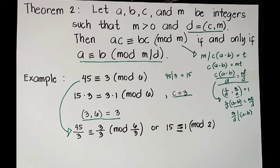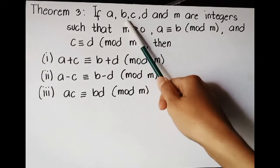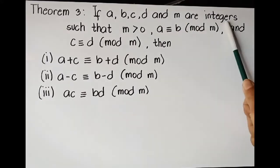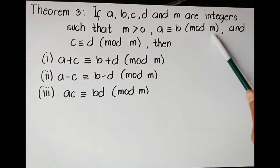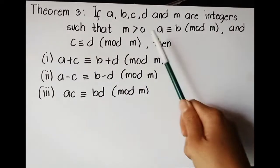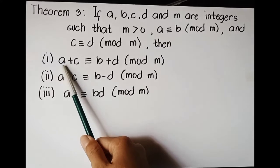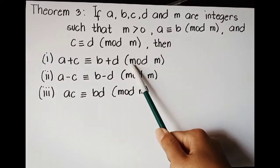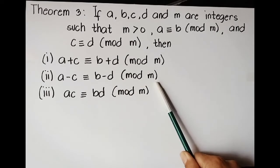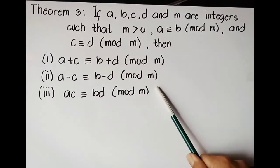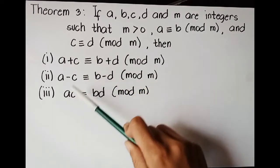Now let's proceed to Theorem 3. Theorem 3 states that if a, b, c, d, and m are all integers such that m is greater than 0, and a congruence b mod m and c congruence d mod m, then it follows in these cases: first case, a plus c congruence b plus d mod m; second case, a minus c congruence b minus d mod m; and the third case, ac congruence bd mod m. The only difference is their sign — addition, subtraction, and multiplication.